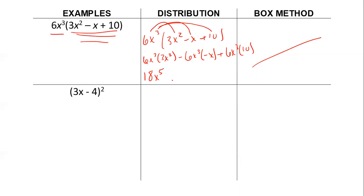Negative 6 times negative 1 is positive 6, and x cubed times x is x to the fourth. Then 6 times 10 is 60, and x cubed times 1 is just x cubed.